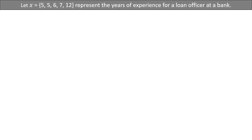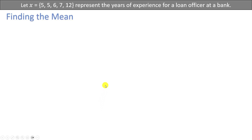Let's say that we have a data set represented by the letter X, which contains the values 5, 5, 6, 7, and 12, and that these numbers represent the years of experience for a loan officer at a bank. Let's go ahead and find the mean. To find the mean we would want to add up all the numbers in the data set and divide by how many numbers we have.